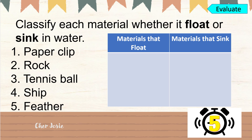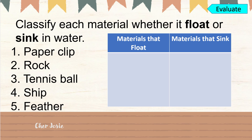Let's check your understanding by answering this activity. Classify each material whether it floats or sinks in water. Number one: paper clip — sinks. Number two: rock — sinks. Number three: tennis ball — floats. Number four: ship — floats. Number five: feather — floats. I hope you got five correct answers.